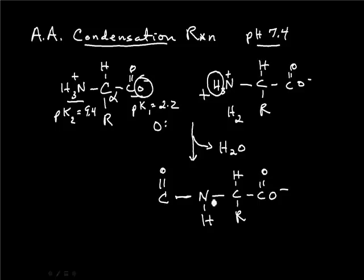So we end up with three bonds on the nitrogen instead of four. It becomes neutral. And we end up with four bonds on the carbon on the second amino acid.